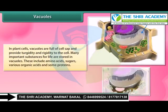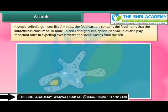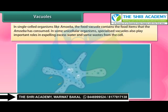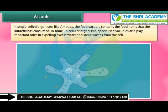In plant cells, vacuoles are full of cell sap and provide turgidity and rigidity to the cell. Many important substances for life are stored in vacuoles, including amino acids, sugars, various organic acids, and some proteins. In single-celled organisms like amoeba, the food vacuole contains the food items consumed. In some unicellular organisms, specialized vacuoles also play important roles in expelling excess water and wastes from the cell.